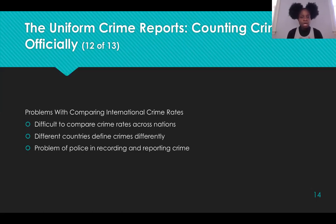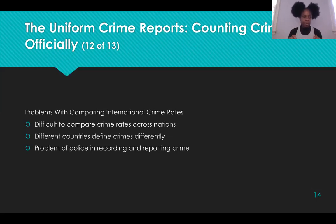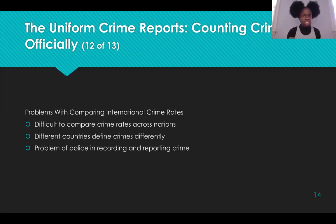There are also problems with comparing international crime rates. The hierarchy rule and the different ways in which different nations record crime make it extremely difficult to compare crime rates across nations. Different nations define different crimes differently — for example, rape is defined differently not only among the states in the United States but around the globe, including differences in definitions of consent. There is also the problem of the efficiency, accuracy, capacity, and honesty of the police in various countries in reporting crimes, especially homicide.